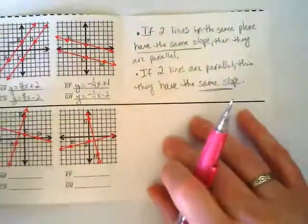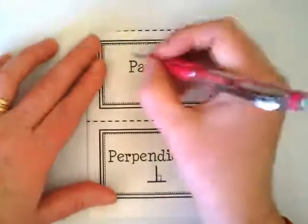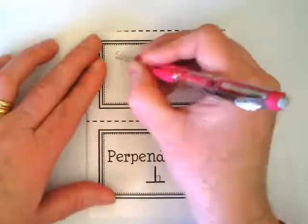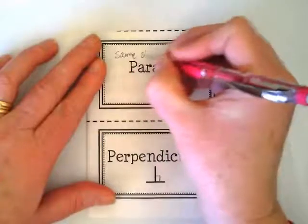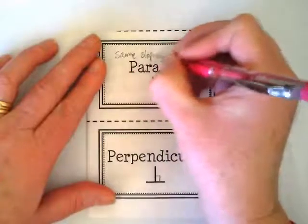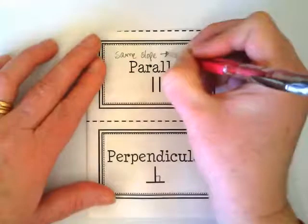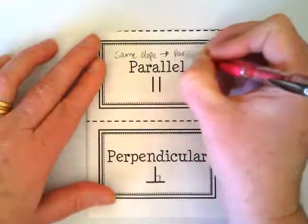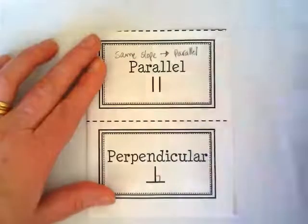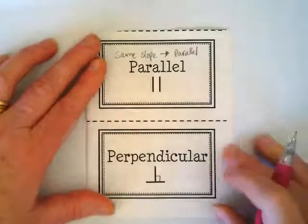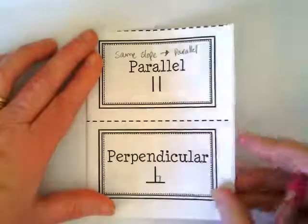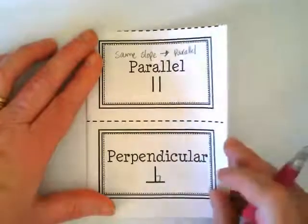Flip back to the cover and write across here: same slope, same — is parallel. If we have the same slope then it's parallel.